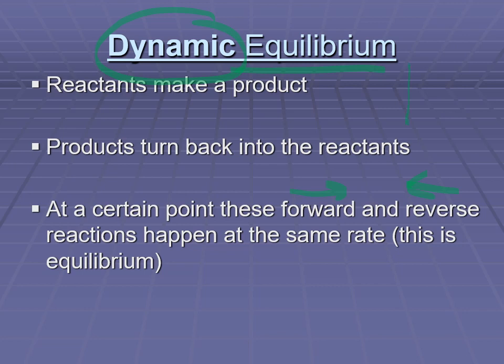We saw these on our concentration-time graphs where you have concentration over time. The reactants would decrease, and the slope would initially be quite steep. The rate of the reaction, which is the slope of the concentration-time graph, was quite steep initially, and then it would plateau out. That plateau, when it has reached horizontal, means that the rate has stabilized. Essentially, the slope is now zero. That is equilibrium.